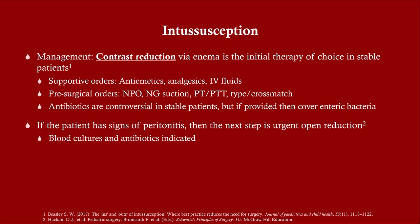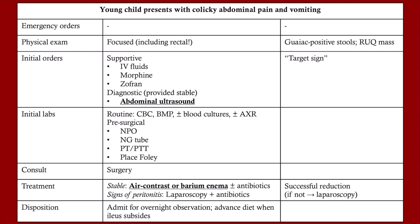Antibiotics are controversial in stable patients without signs of peritonitis — they are optional. However, if the patient does have signs of peritonitis, you need to get blood cultures and administer antibiotics covering enteric pathogens, such as clindamycin and gentamicin or a carbapenem. If there are signs of peritonitis, do not attempt contrast reduction — proceed directly to laparotomy for open reduction.